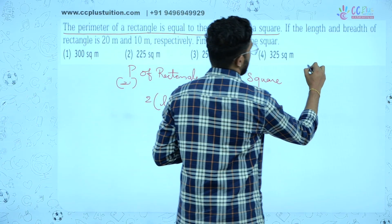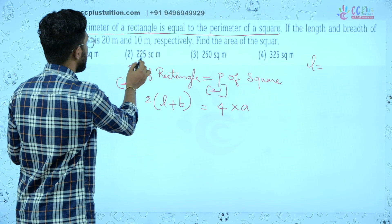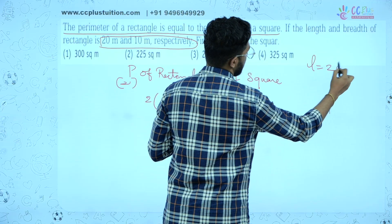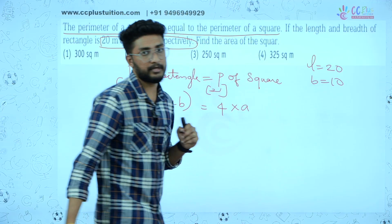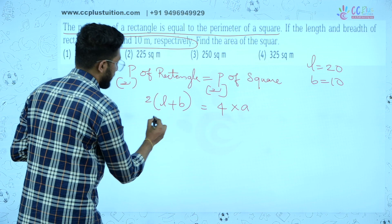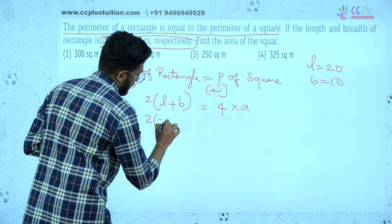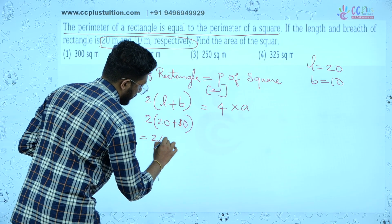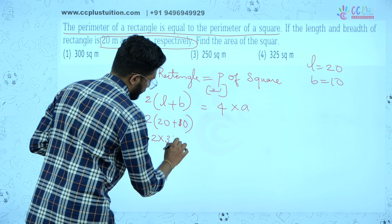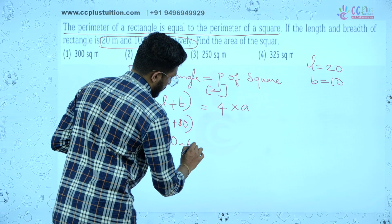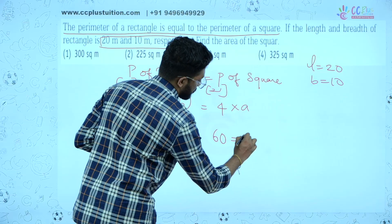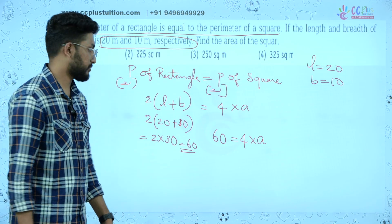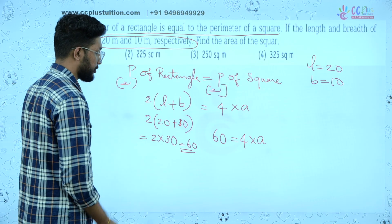The length and breadth of the rectangle: length is equal to 20 and breadth is equal to 10. So 2 into (length plus breadth) is equal to 60.